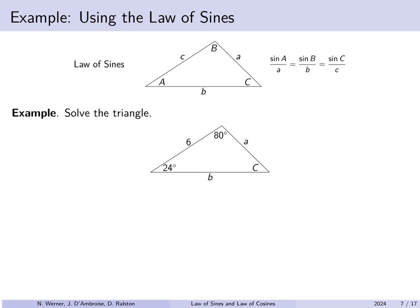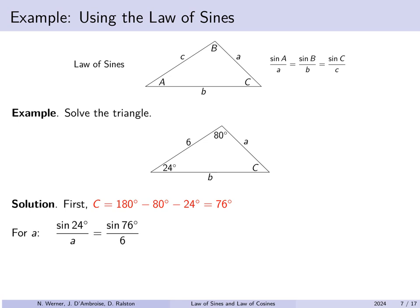We have two angles and the side between them. Since all three angles of a triangle must add up to 180 degrees, the missing angle C is 76 degrees. Now we can start finding side lengths using the law of sines. For side length a: the sine of angle A, which was 24 degrees, divided by length a must equal the sine of angle C, which is 76 degrees, divided by 6. The only unknown is length a, so cross-multiplying gives a equal to 6 times the sine of 24 degrees divided by the sine of 76 degrees, which is approximately 2.52.